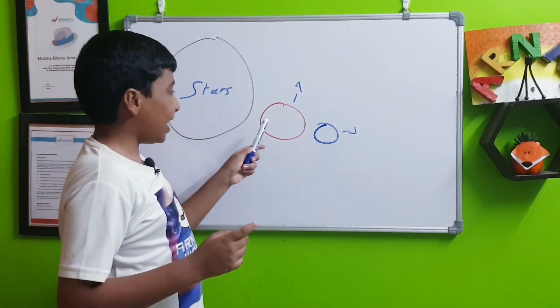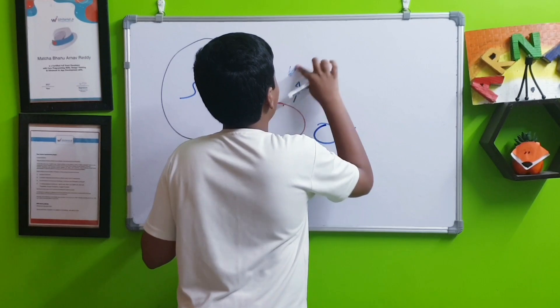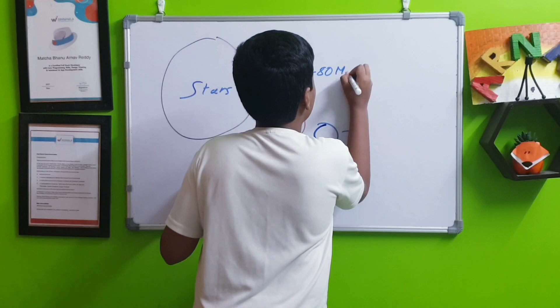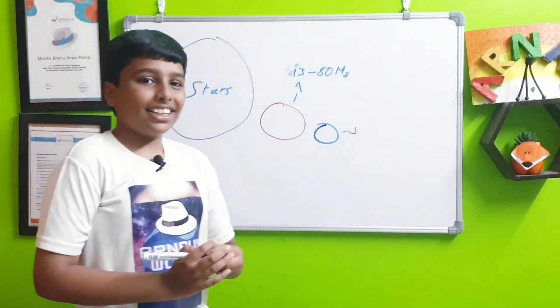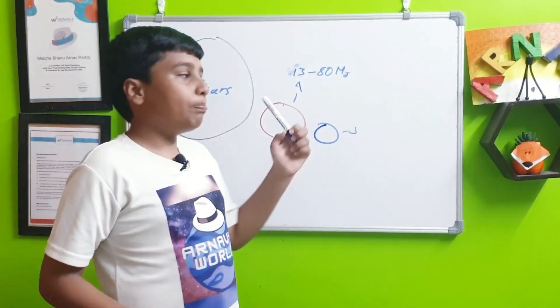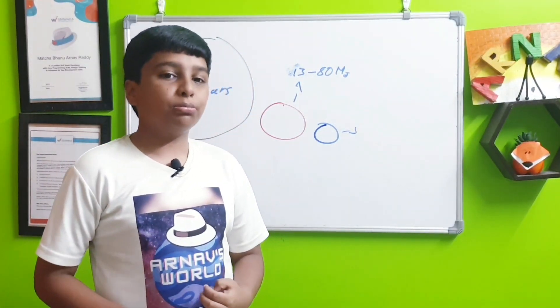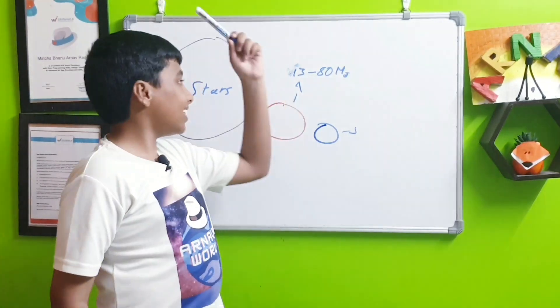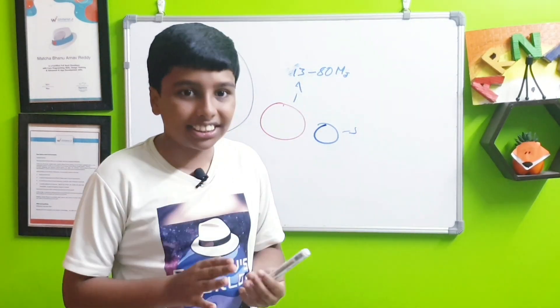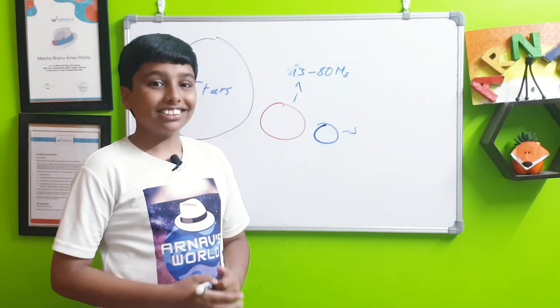Next, the range of mass inside brown dwarfs is 13 to 80 Jupiter masses. This is the symbol for Jupiter masses - it is just an M followed by a J. For any planet-like thing to become a brown dwarf, it must have 13 to 80 times more mass than Jupiter. If it has less than 13 Jupiter masses and is gaseous, it is counted as a sub-brown dwarf.